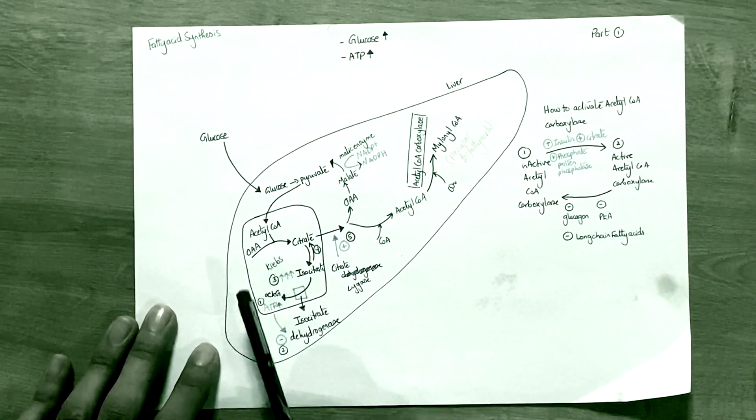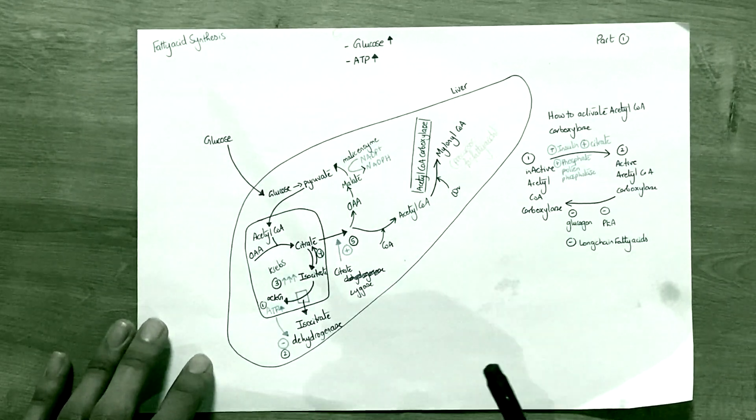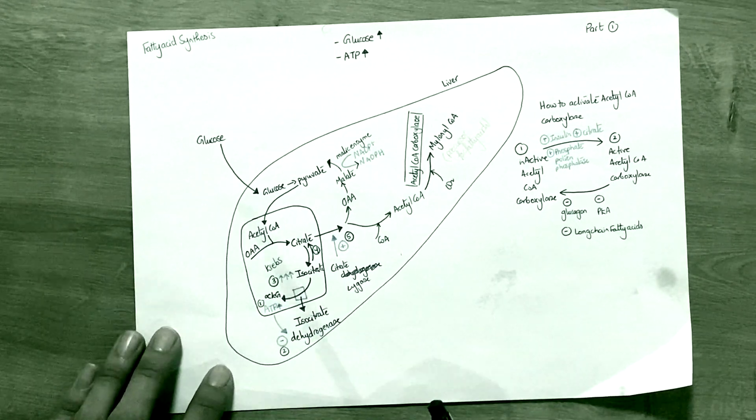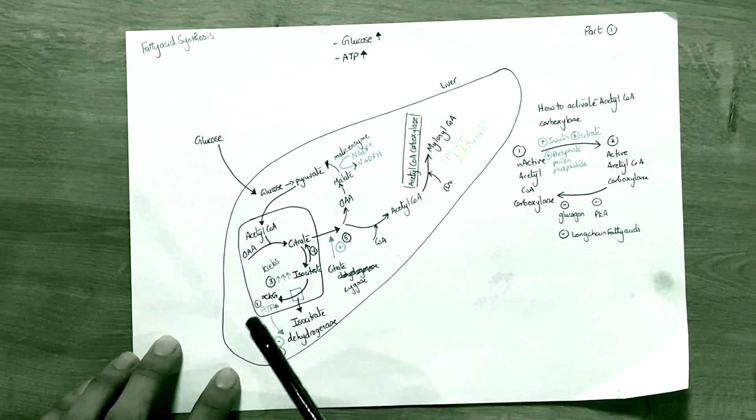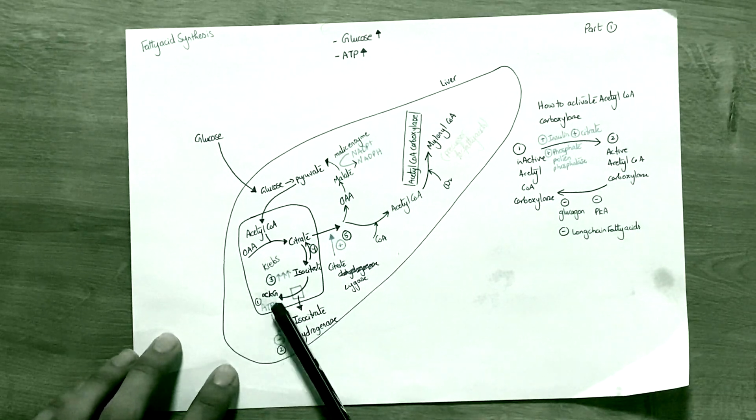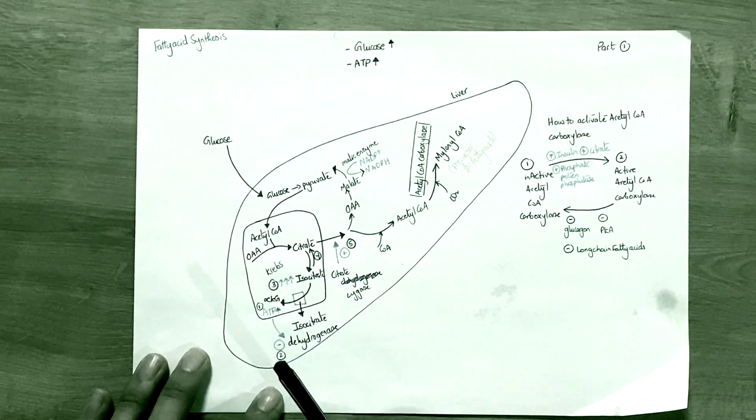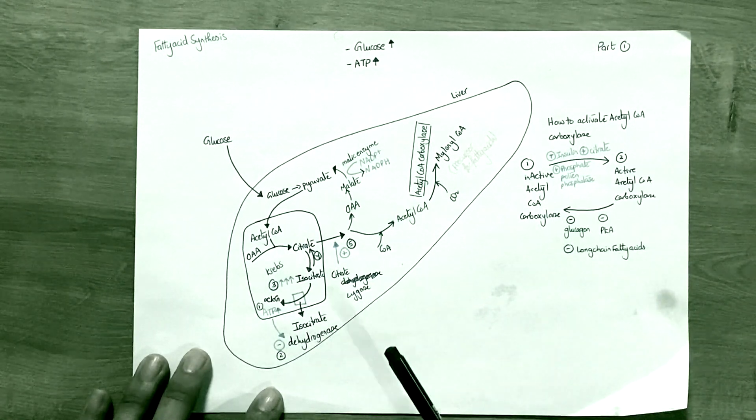What triggers the synthesis of fatty acid is a very key step here in the Krebs cycle. Let's say that the Krebs cycle is going well and then the body realizes there's a lot of ATP concentration. ATP itself, when it's in high concentration, acts as a negative regulator on the enzyme isocitrate dehydrogenase.